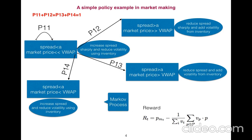Actions are in ellipse. Reduce spread sharply and add volatility from inventory, for example. So you have four states, four actions, but you could have much more. Actions could be probabilistic, so the sum of the probabilities should be equal to one.